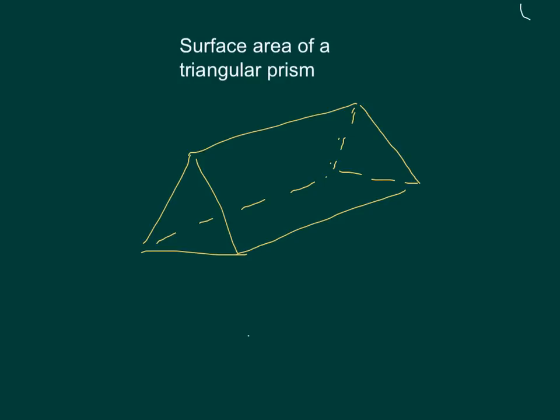Today we're going to be looking at calculating the surface area of a triangular prism. Just looking at the shape itself it's kind of difficult to figure out what you're doing. The best thing to do is either break it into separate shapes and see how many there are. In this case there are two triangles and three rectangles.